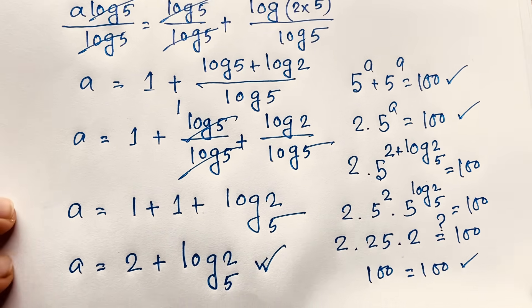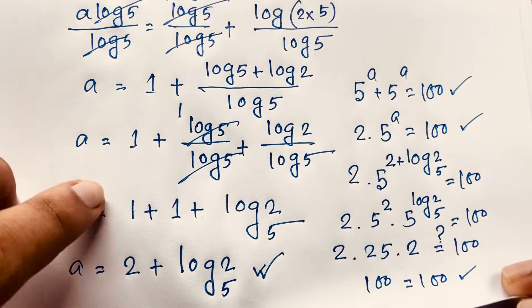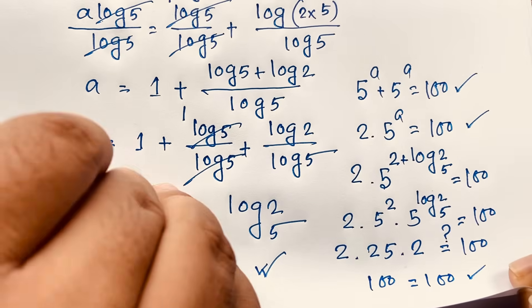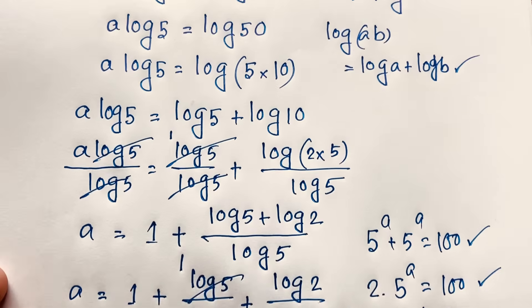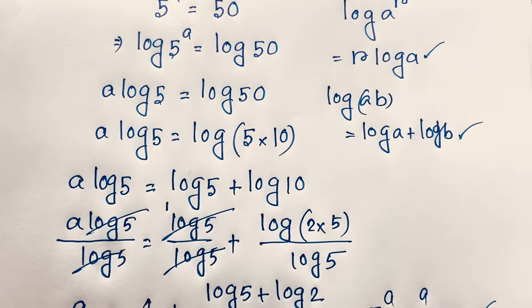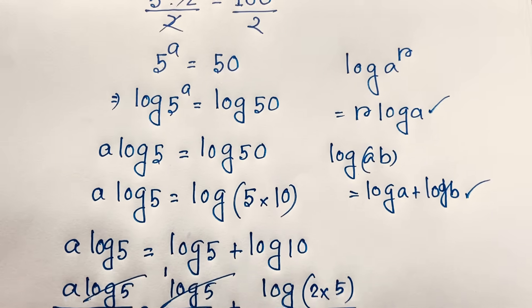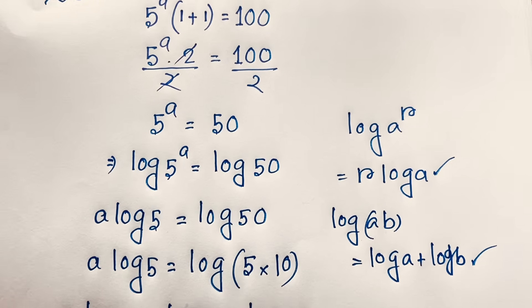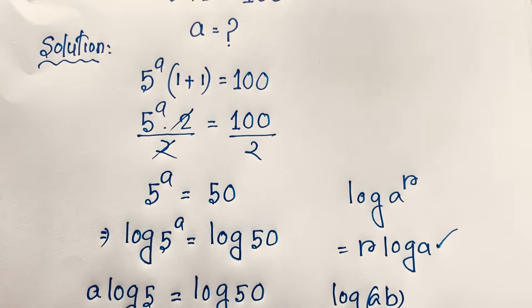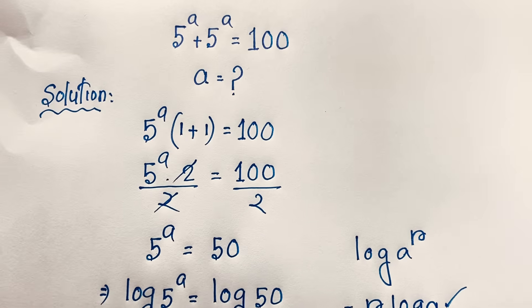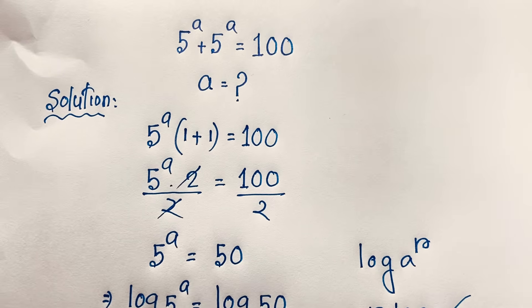So a is equal to 2 plus log base 5 of 2. This is our final answer in this exponential math problem. Thank you all — if you enjoy this math problem, please subscribe to my channel for other interesting videos. Goodbye, take care.